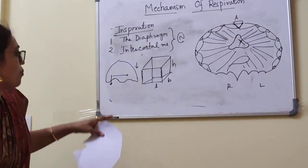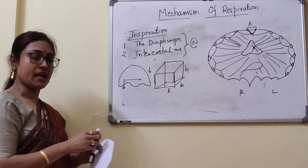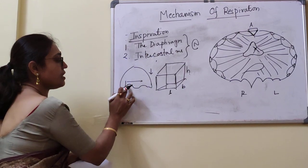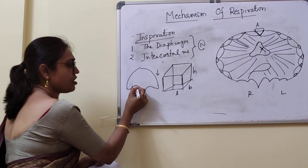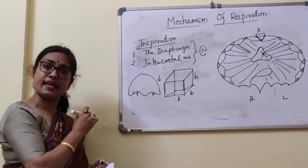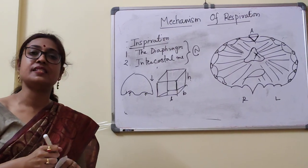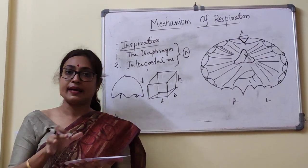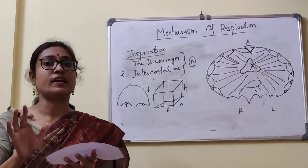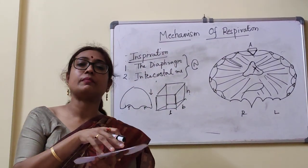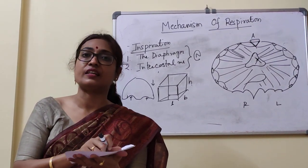When the diaphragm is relaxed, the domes reach a height within the thoracic cavity. When inspiration starts, the diaphragm contracts. Initially, the central portion contracts — the peripheral part attached to the ribs is fixed, and the central tendon contracts. As it contracts centrally, the dome or cupula will descend and flatten.